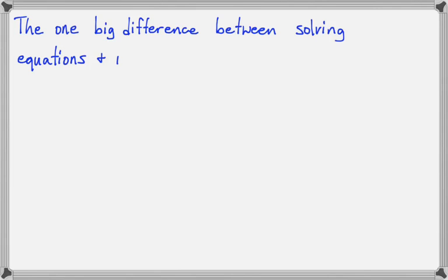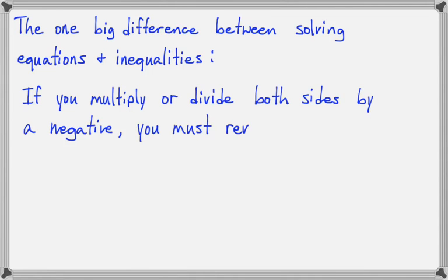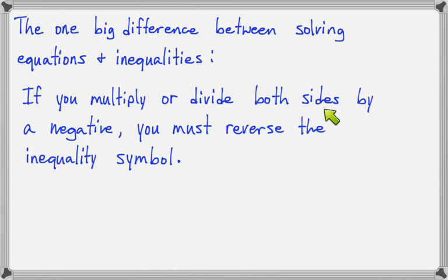The one big difference between solving equations and inequalities is that if you multiply or divide both sides by a negative, you must reverse the inequality symbol. At first it seems like a rule somebody made up, like rules in a Monopoly game. But remember that on the left end of the number line, numbers get smaller as they go left — further from zero, they actually get smaller. For example, negative 100 is smaller than negative 3. That's why dividing by a negative changes everything around and you need to flip the inequality symbol.